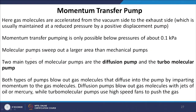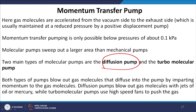In momentum transfer pumps, gas molecules are accelerated from the vacuum side to the exhaust side, which is maintained at reduced pressure by a positive displacement pump. Momentum transfer pumping is only possible below 0.1 kilo Pascal. The two main types are the diffusion pump and the turbo molecular pump. Diffusion pumps blow out gas molecules using jets of oil or mercury, while turbo molecular pumps use high-speed fans to push out gas.